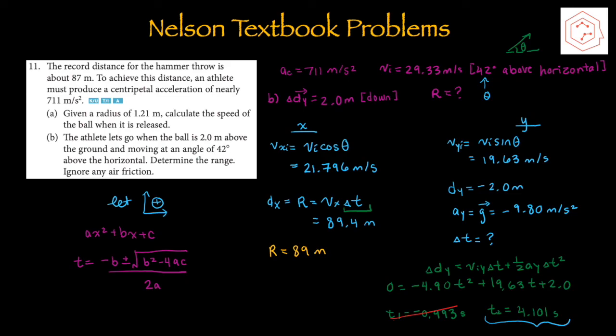Now applying this to the X component: the initial velocity in x is 29.33 × cos(42°) = 21.796 m/s. Since there's no acceleration in the X component, vx remains constant. Range = vx × t = 21.796 × 4.101, giving a range of 89 meters.